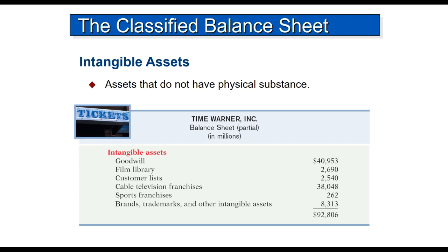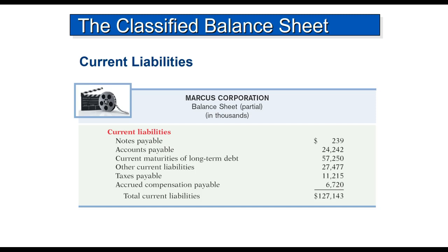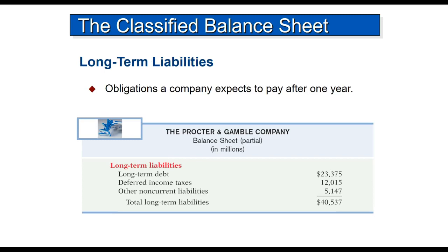The current liabilities section is a lot more simple. These are the debts or obligations the company has to pay within the coming year. It usually lists notes payable first, followed by accounts payable. The others are basically in order of magnitude, though that's not a hard and fast rule. In this case: notes payable, accounts payable, taxes — you've got to pay those — and accrued compensation, and so on.